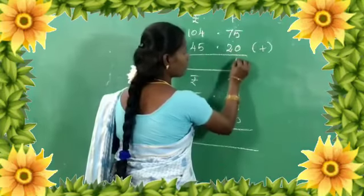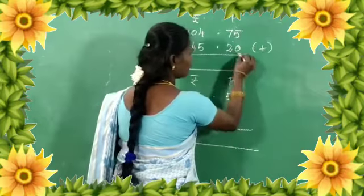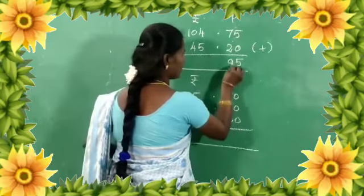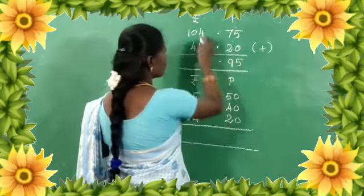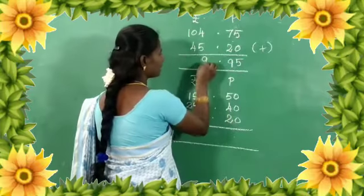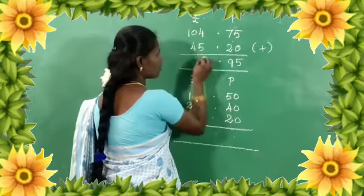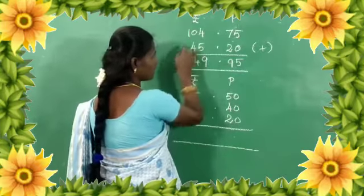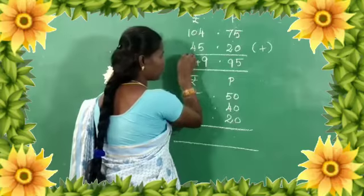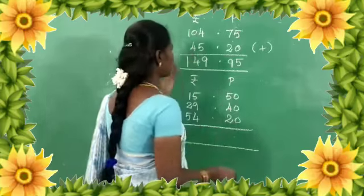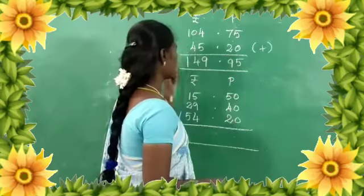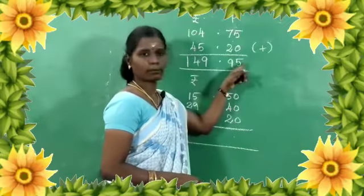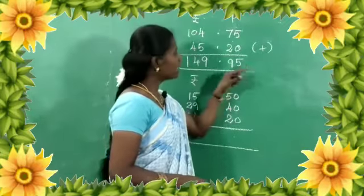5 plus 0 is 5. 7 plus 2 is 9. 4 plus 5 is 9. 0 plus 4 is 4. If we add 1 here, the answer is 149 Rupees 95 Paisa.